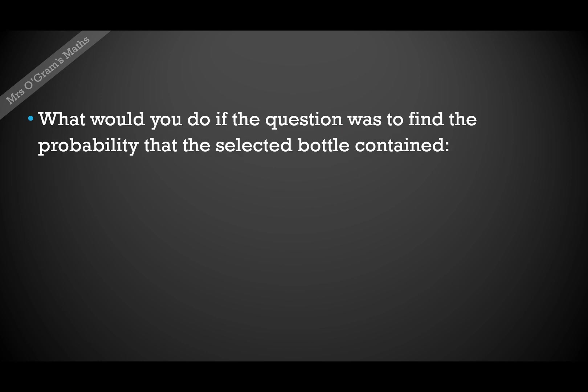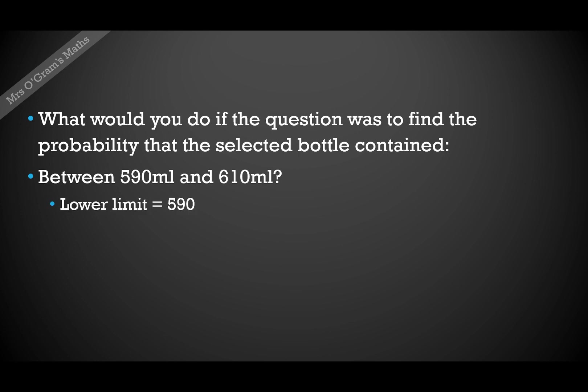So what if you wanted to do something a bit different? Instead of it being the probability that it was less than 580 millilitres, what about if it was the probability it was between 590 ml and 610 ml? In that case, you would put your lower limit as 590 and your upper limit at 610 and read off the probability from your calculator.